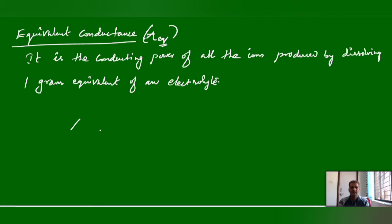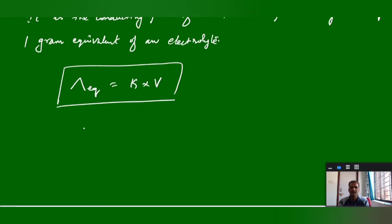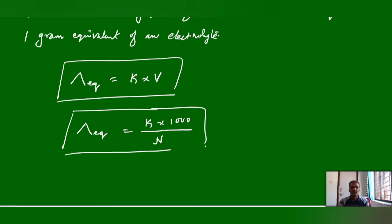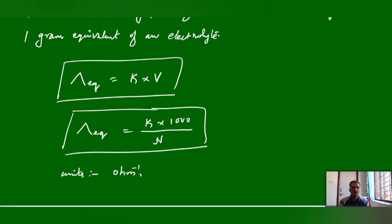The formula for equivalent conductance is: lambda EQ equals K into 1000 by normality (N). This formula is used when the units of equivalent conductance are ohm inverse centimeter squared equivalent inverse (CGS). The concentration term used is normality — number of gram equivalents per liter — instead of molarity.